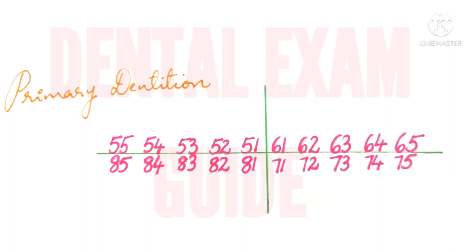This is the FDI system of tooth notation for primary teeth. Teeth in the first quadrant are numbered from 51 to 55, starting from the maxillary right central incisor to the maxillary right second molar. The first quadrant is indicated by 5, the second by 6, the third by 7, and the fourth by 8. Teeth in the second quadrant are numbered from 61 to 65, the third quadrant from 71 to 75, and the fourth from 81 to 85.